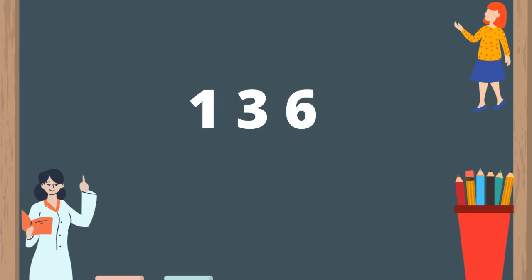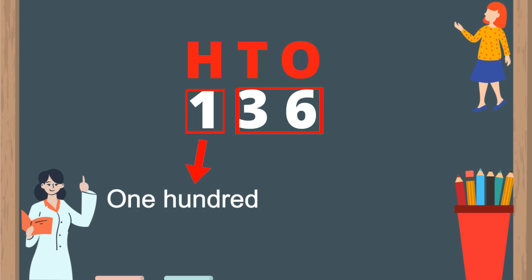Why don't we try another number? 1, 3, 6. Here, 6 is in the ones place, 3 is in the tens place, and 1 is in the hundreds place. Let's divide the number into 2 parts. The first part is 1 in the hundreds place. The second part is 3 in the tens place and 6 in the ones place, so 3 and 6 is read as 36. So this number is 136.